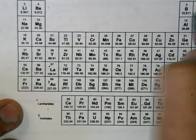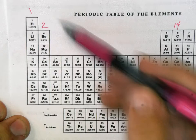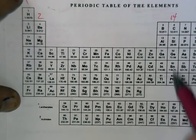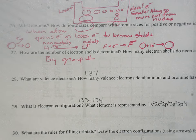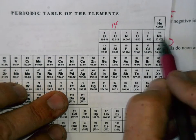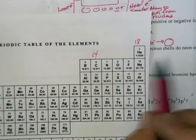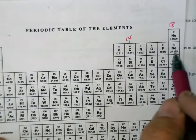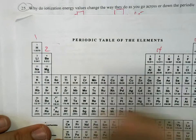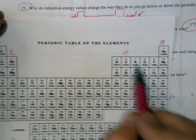For example, group 14 has four electrons in the outer shell — if the group number is a 'teen' number like 13 or 17, just take the last digit. How many electron shells do neon and nitrogen have? Neon is in period 2, so it has two shells. Nitrogen is also in period 2, so it also has two shells.